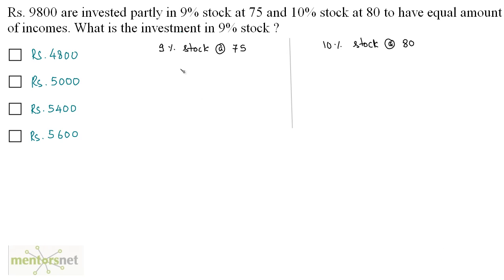So we have 9% stock at 75 and we have 10% stock at 80. Let us say that the amount invested in the 9% stock is X rupees. So the amount invested in 10% stock will be the total amount invested minus X, so 9800 minus X.